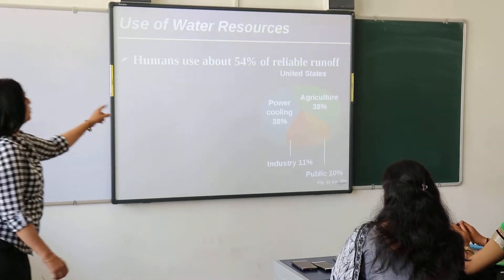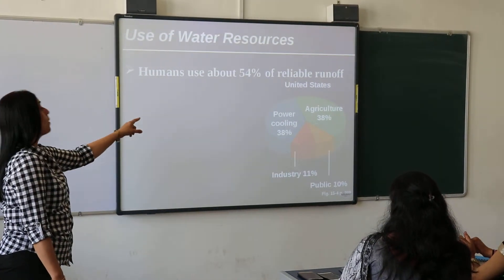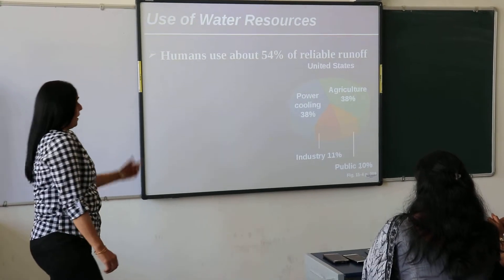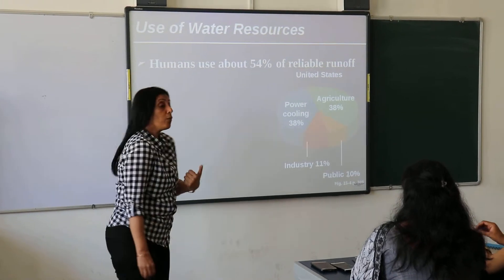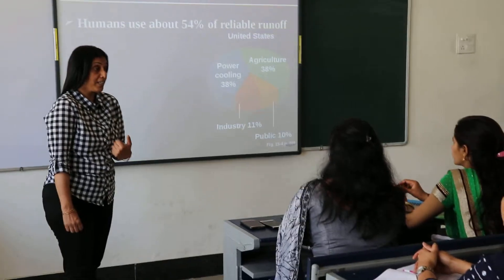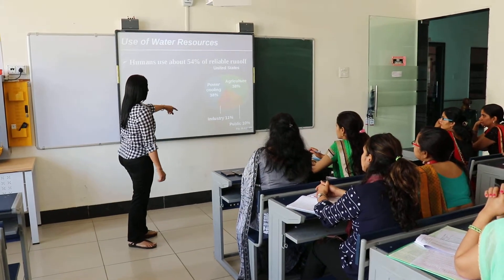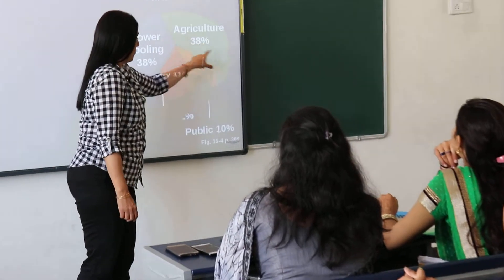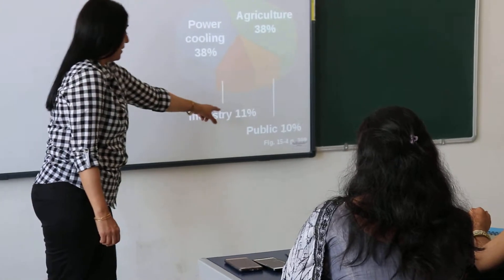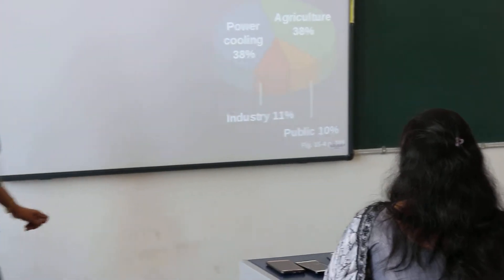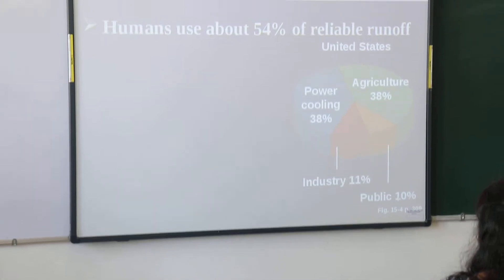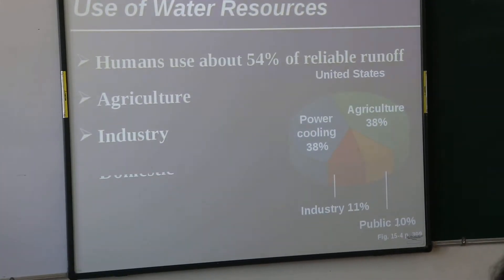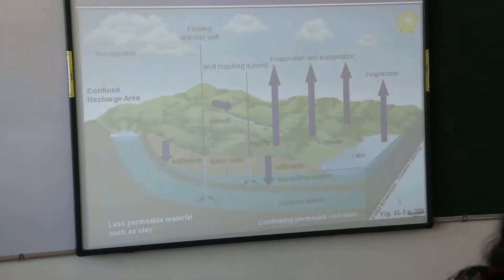Humans use about 54% of reliable runoff — more than 50% is being used as runoff. For power cooling, we are using 38%. For agriculture, we are using 11%. Even in public use, we are using 10%. The major sectors consuming water are agriculture, industry, domestic use, and power plants.